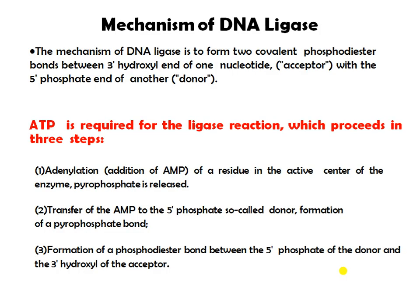The mechanism of DNA ligase is to form two covalent phosphodiester bonds between the 3-hydroxyl end of one nucleotide and the 5-phosphate end of another. ATP is required for the ligase reaction, which proceeds in three steps.